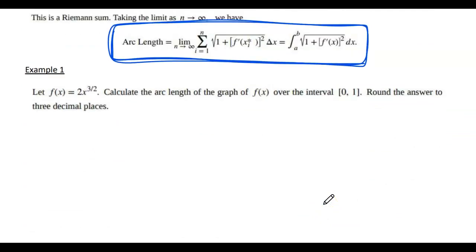All right, so let's look at our first example. If I want to look at f(x) equals 2x to the three halves, and I want to calculate the arc length from 0 to 1, then what I'm going to do is first find f prime. So I'm finding the derivative at any point on the curve. Take the power, bring it down: 3x to the one half. And I'm going to plug into our formula here.